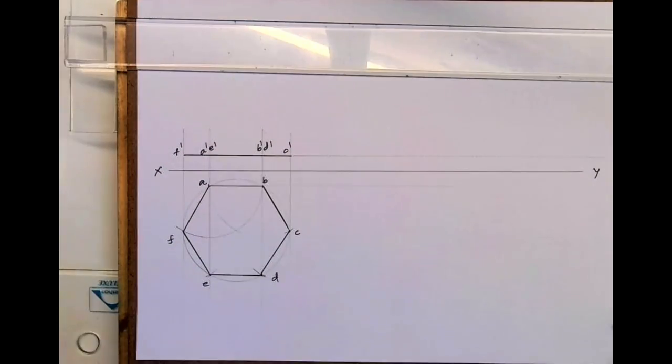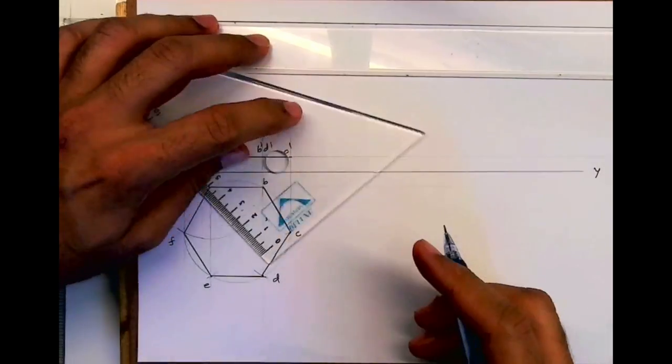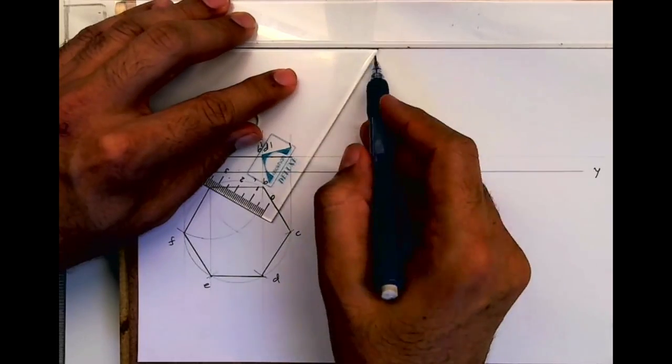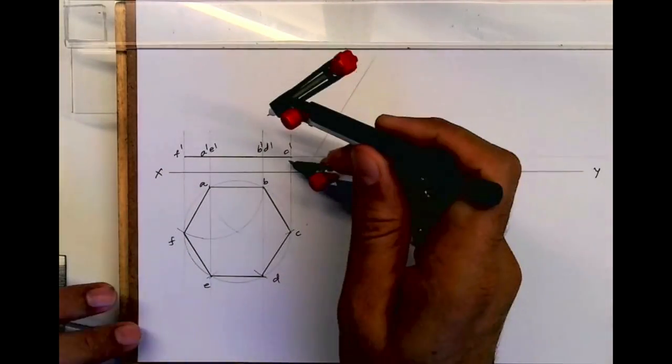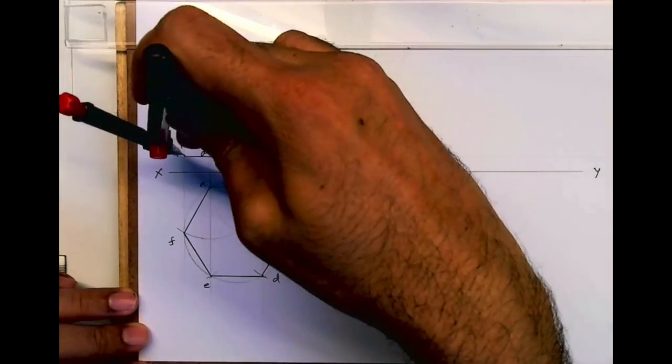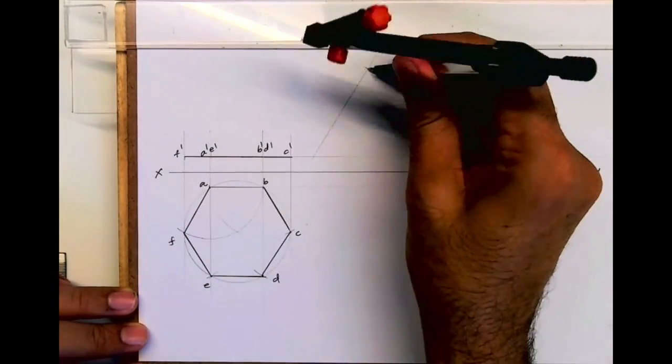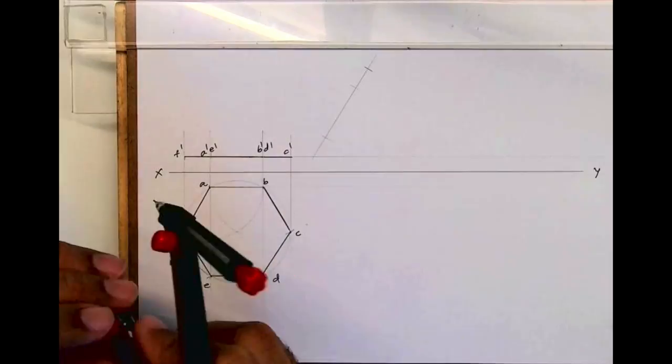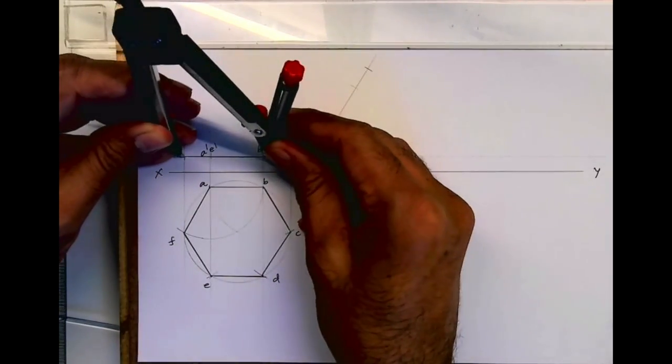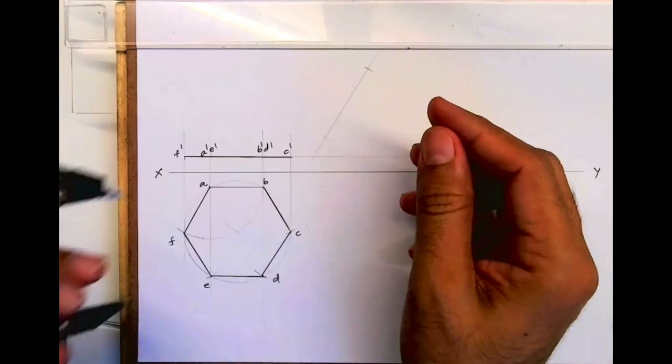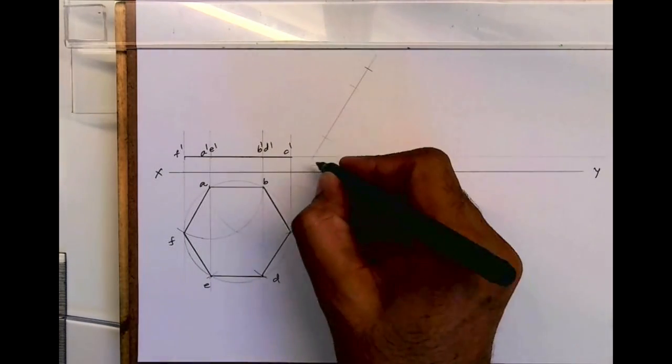Now I need to draw 60-degree inclination with HP, which is with the XY line. Take the side and cut from here. Take this distance and cut from here - it will be the same from both sides. Now mark all these points and project: C dash, F dash, A dash, E dash, B dash, D dash.